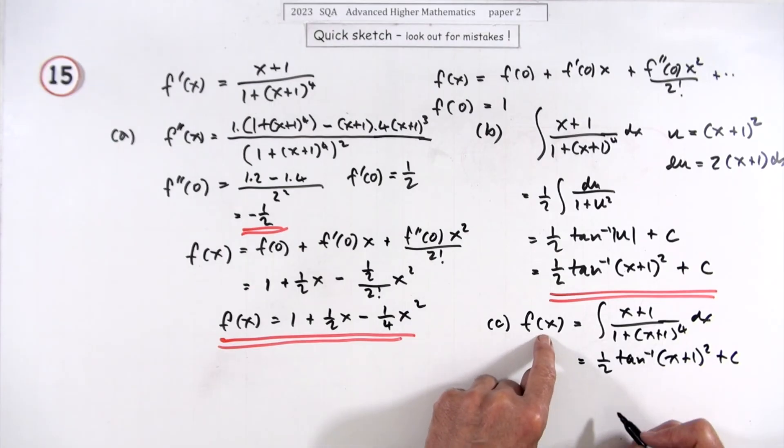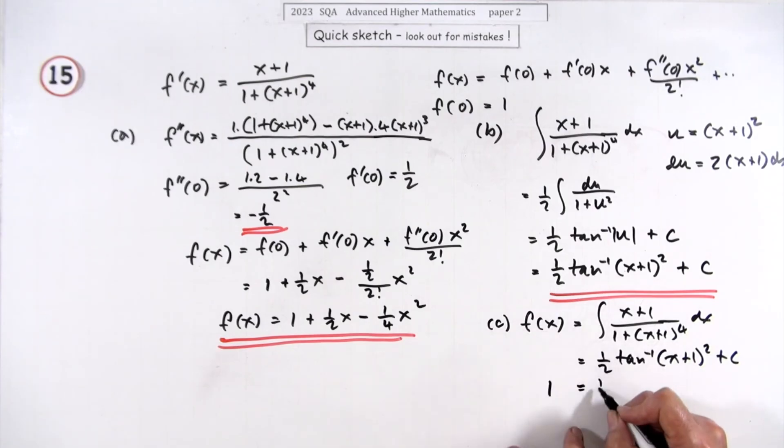So when x is zero, that's one. So that'll be (1/2)tan⁻¹((0+1)²) + C. One squared is one, tan⁻¹(1) is π/4, so that's (1/2)(π/4) + C.